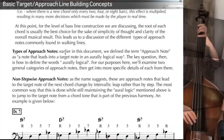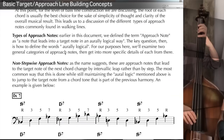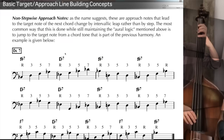For the level of bass line construction we're discussing, the root of each chord is usually the best choice for simplicity of thought and clarity of the overall musical result. This leads to a discussion of the different types of approach notes most commonly found in walking lines. Non-stepwise approach notes, as the name suggests, lead to the target note of the next chord change by intervallic leap rather than by step. The most common way to do this while maintaining aural logic is to jump to the target note from a chord tone that is part of the previous harmony.